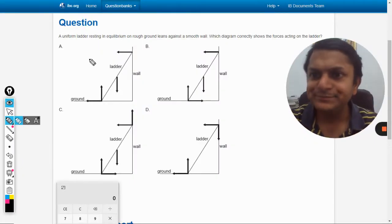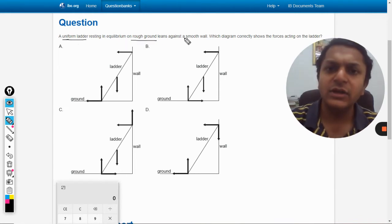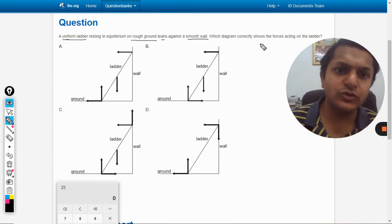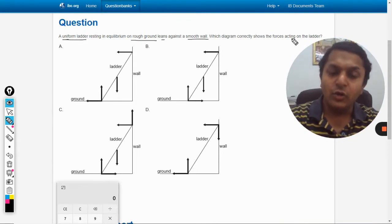Okay, in this question a uniform ladder resting in equilibrium on rough ground leans against a smooth wall. So the wall is smooth, there is no friction on the wall. Which diagram correctly shows the forces acting on the ladder? Very beautiful question, I would say highly conceptual.